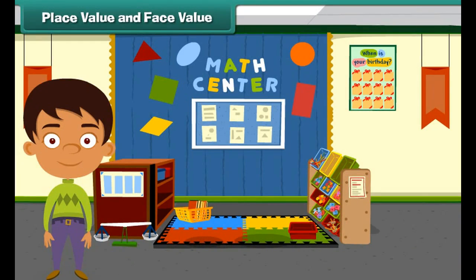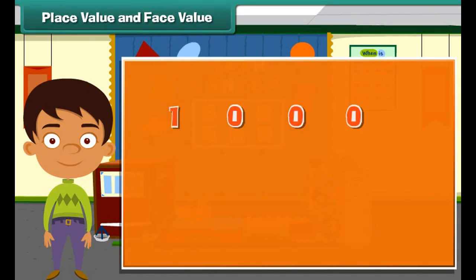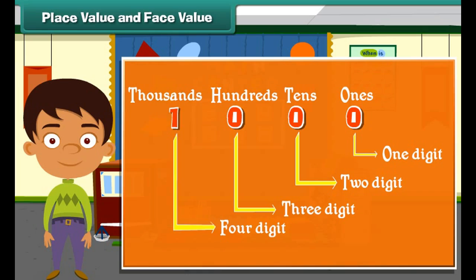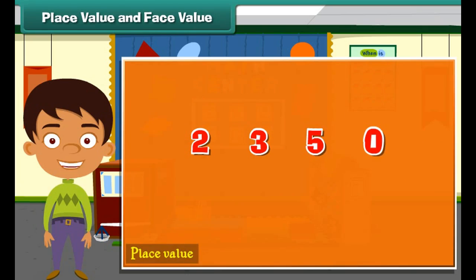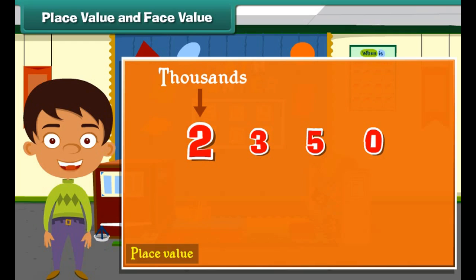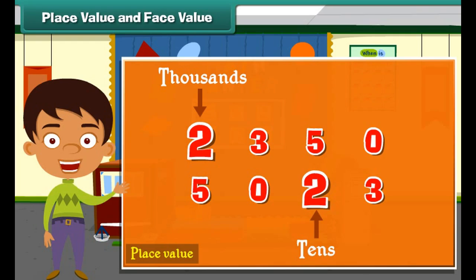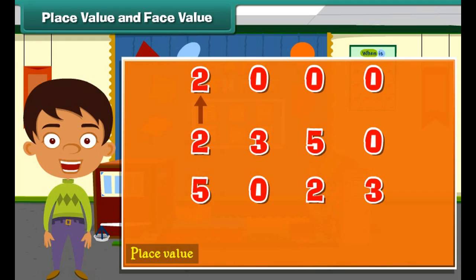Ones, tens, hundreds, and thousands are all place values of a digit. The place value of a digit helps us determine its value. For example, the digit 2 is at the thousands place in 2350, whereas it is at the tens place in 5023. Hence, the value of 2 in 2350 is two thousands, and in 5023 it is two tens, that is twenty.